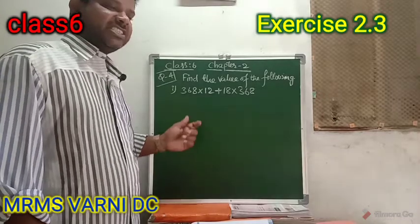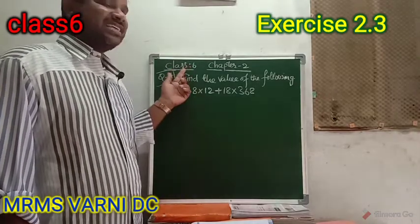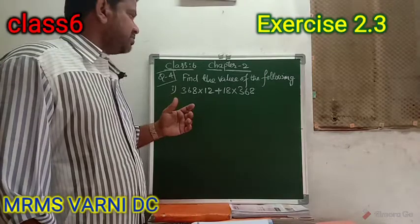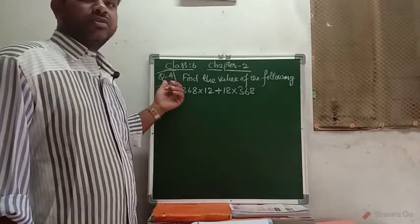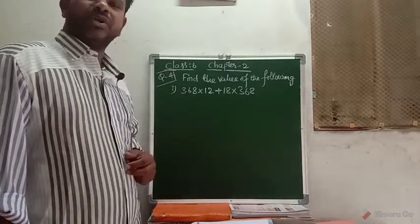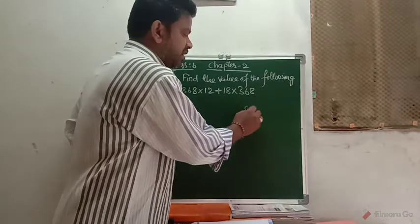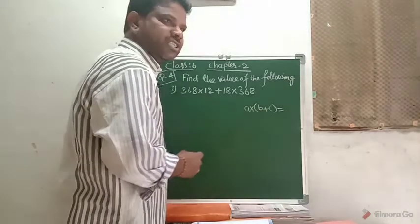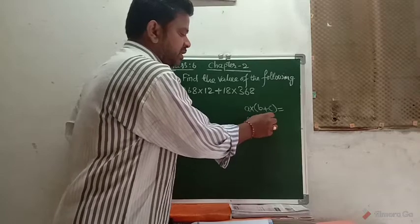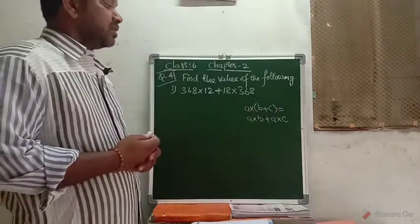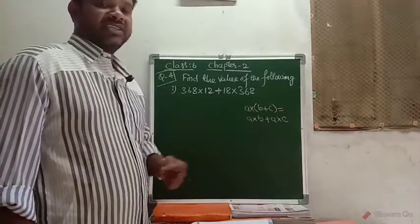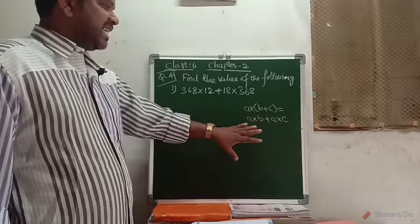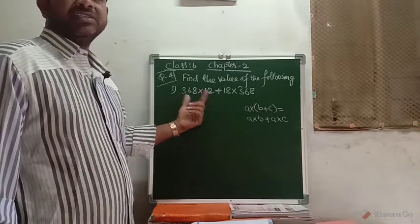Hi, this is BB Care. In this session we will discuss the Maths chapter 2, Distributive Property, Exercise 2.3, Question Number 4, which is related to distributive property. The standard form is A into B plus C, and the expanded form is A into B plus A into C. This is the distributive property of multiplication over addition, and we are going to use this property to solve the given question.